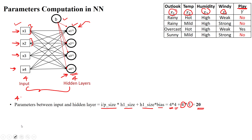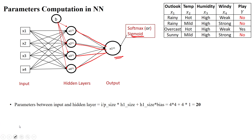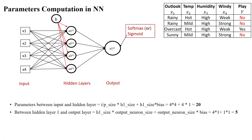After that, we have to construct the output layer. The output layer has only a single neuron. I am going to use the sigmoid activation function for binary class classification. We have to establish the connection between all the neurons in the hidden layer and the output layer neuron. We also need a bias parameter for this one output neuron. How many parameters are needed between the hidden layer and output layer?